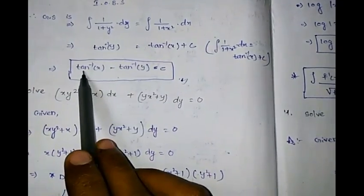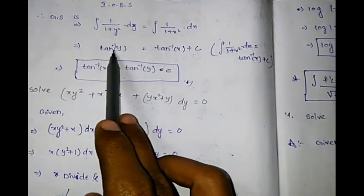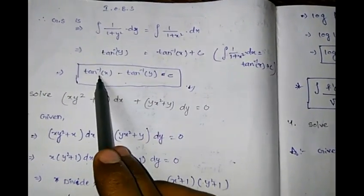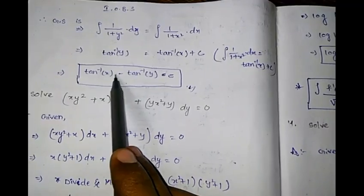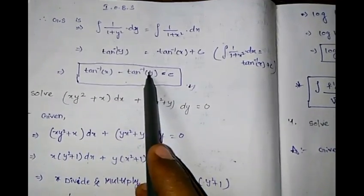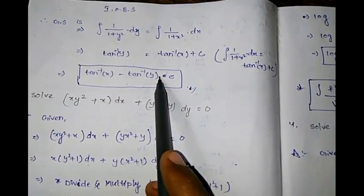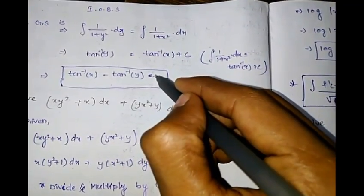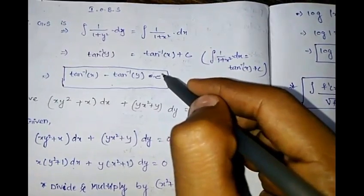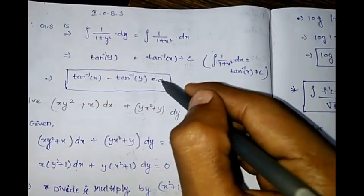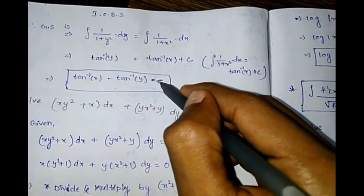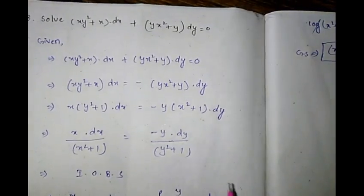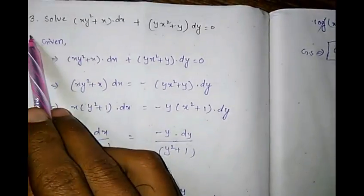Therefore, tan⁻¹y = tan⁻¹x + c. Since minus c is equal to c, we write tan⁻¹x − tan⁻¹y = c as the general solution.